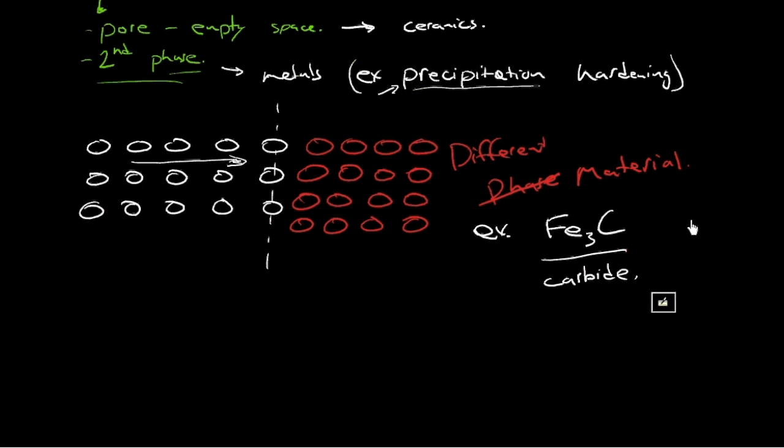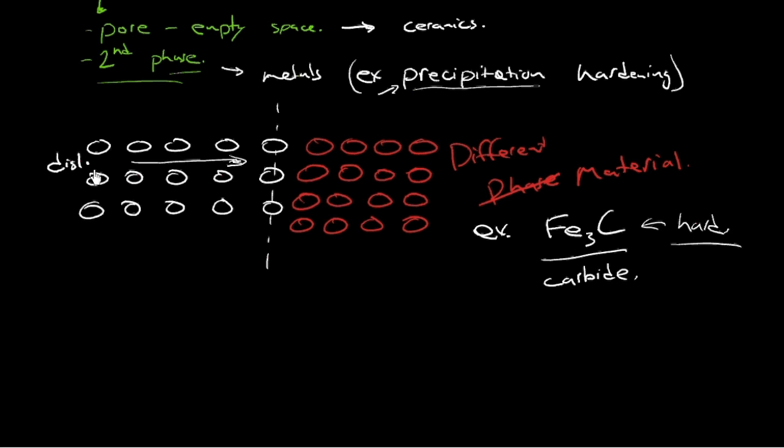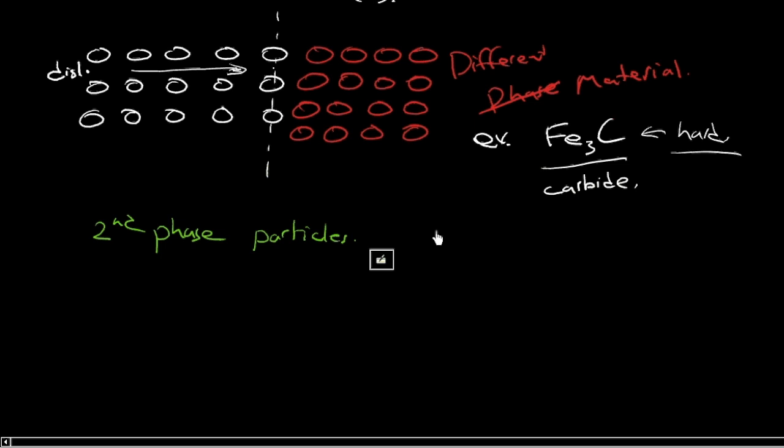And because they're hard, it means they're hard to plastically deform. So it's difficult for the dislocation to cross that boundary and get into the second phase. So these second phase particles, which is a type of volume defect or three-dimensional defect, present an obstacle to dislocation movement.